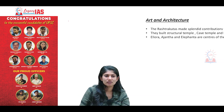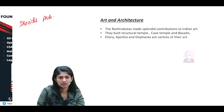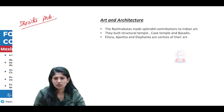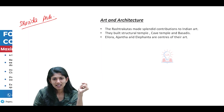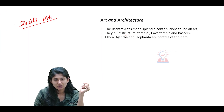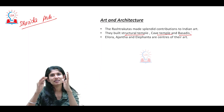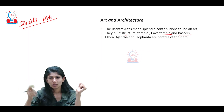The Rashtrakutas stand for your Dravida architecture. The Rashtrakutas made splendid contributions to Indian art — because they built structural temples, cave temples, and basdhis. Basdhis are associated with Jainism and Buddhism.